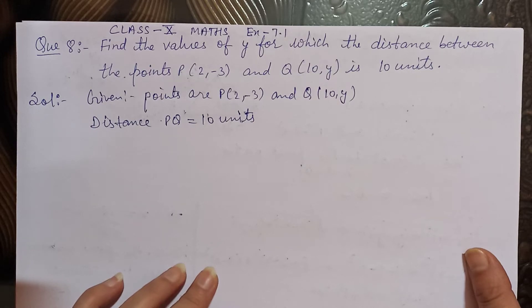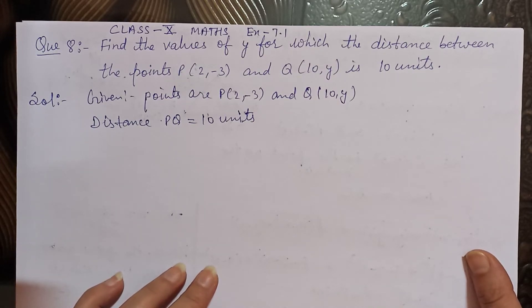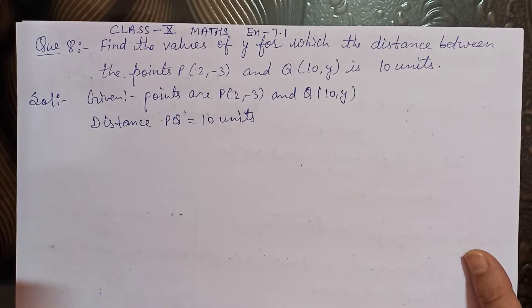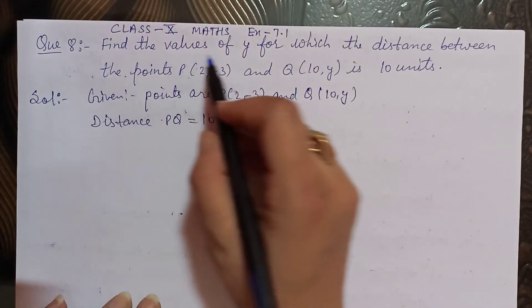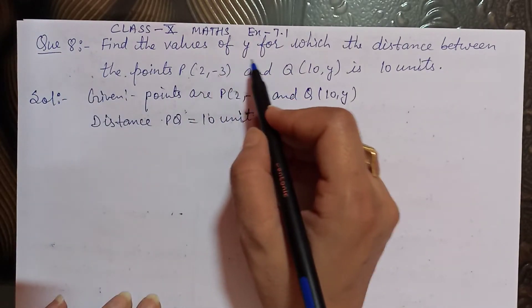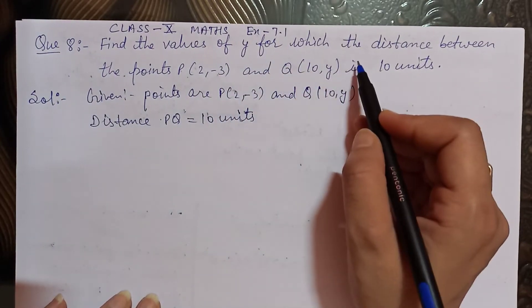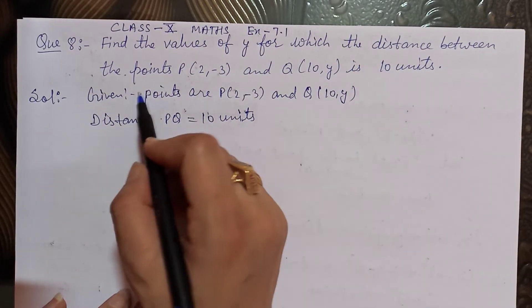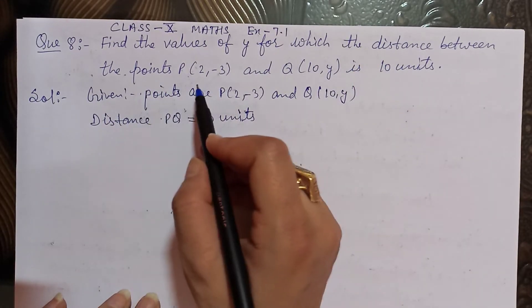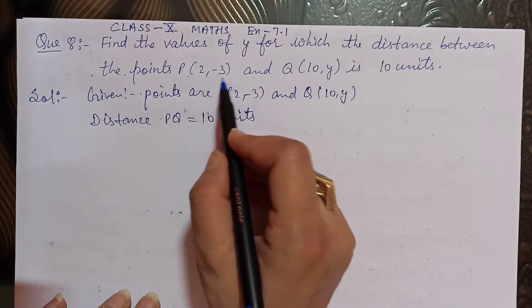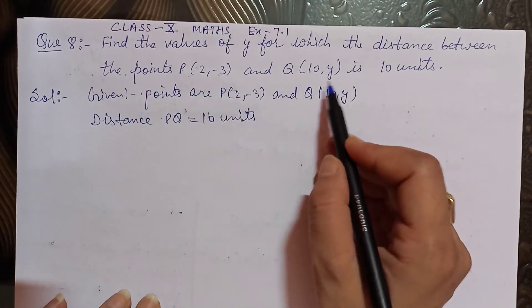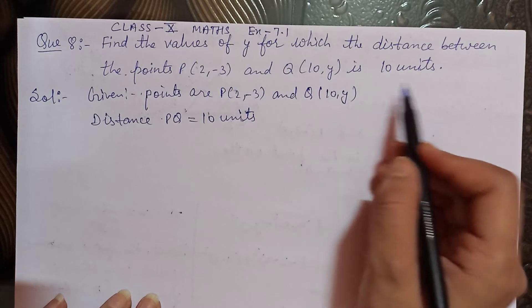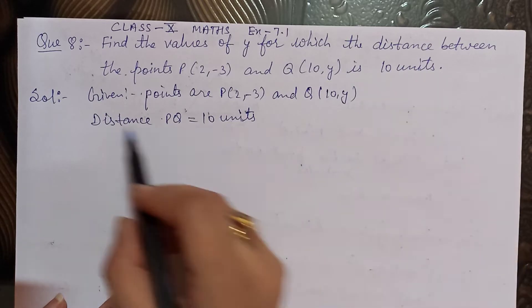Hello students, today we start class 10th math chapter 7 exercise 7.1. Please like, share and subscribe to this channel. Question number 8: find the values of y for which the distance between the points P(2, -3) and Q(10, y) is 10 units.